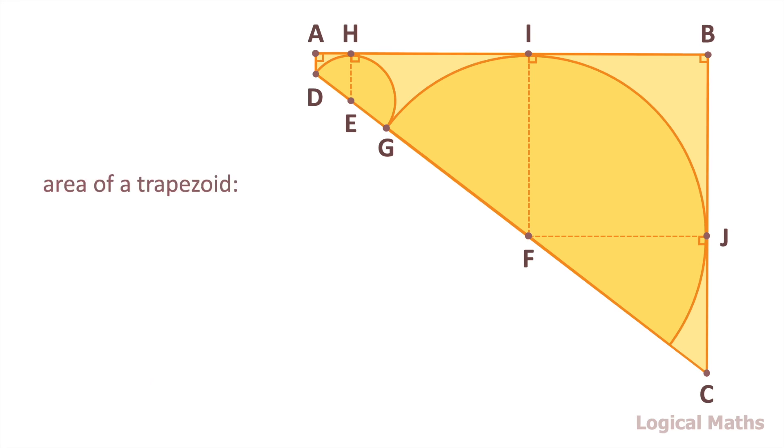To determine the area of the trapezoid, we should take the average of the bases and then multiply by the height. In our case, base one is AD, base two is BC and height is AB.